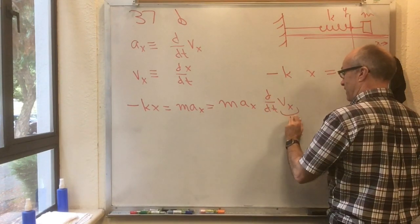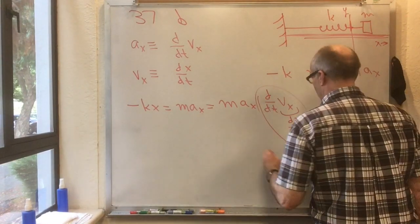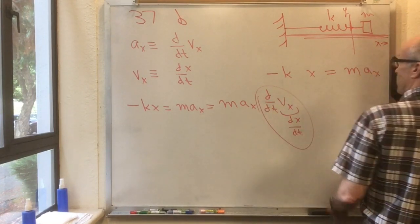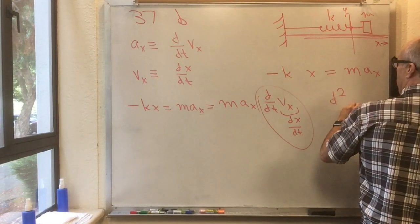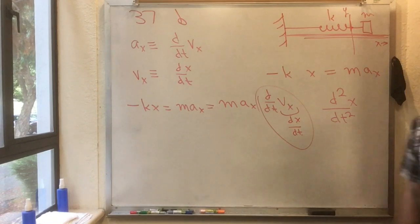Now, d by dt of dx dt has a name or a symbol. If you take d by dt of something you've already taken d by dt of, you write that as d squared by dt squared of that thing.